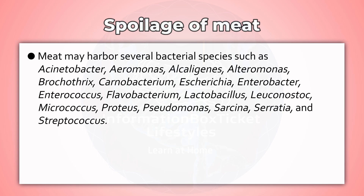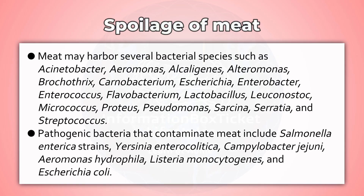Meat may harbor several bacterial species, such as Acinetobacter, Aeromonas, Alkaligenes, Alteromonas, Brochothrix, Carnobacterium, Escherichia, Enterobacter, Enterococcus, Flavobacterium, Lactobacillus, Leuconostoc, Micrococcus, Proteus, Pseudomonas, Sarcina, Serratia, and Streptococcus.